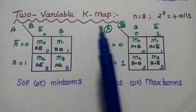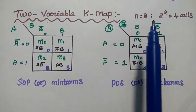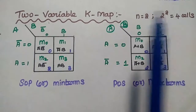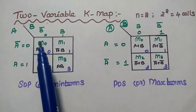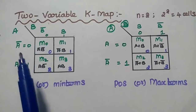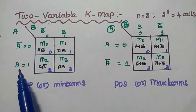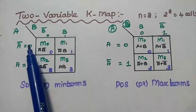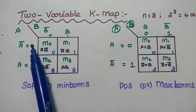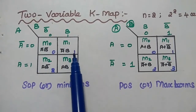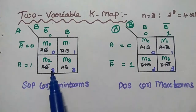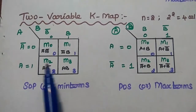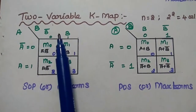Next is the 2-variable K-map, where n equals 2, giving 4 cells (2 squared equals 4). Here, A represents the row and B represents the column. A-bar equals 0, A equals 1. The cell values are: 0,0 gives 0; 0,1 gives 1; 1,0 gives 2; 1,1 gives 3. These values are the exact decimal equivalents of the combinations of the two variables.